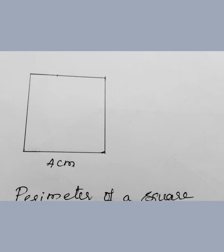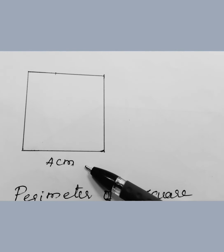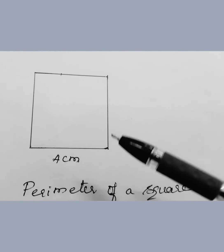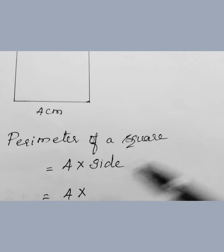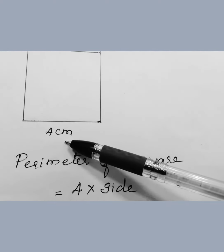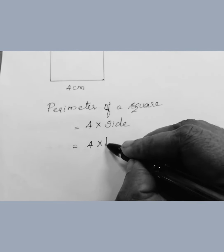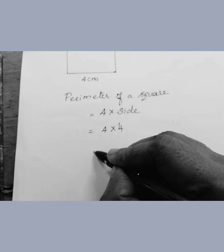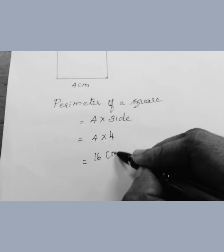Now, in this square, the side given is 4 centimeters. How to find the perimeter? The perimeter of a square is 4 times the given side. The side is 4 centimeters, so 4 into 4 is 16. The answer is 16 centimeters.